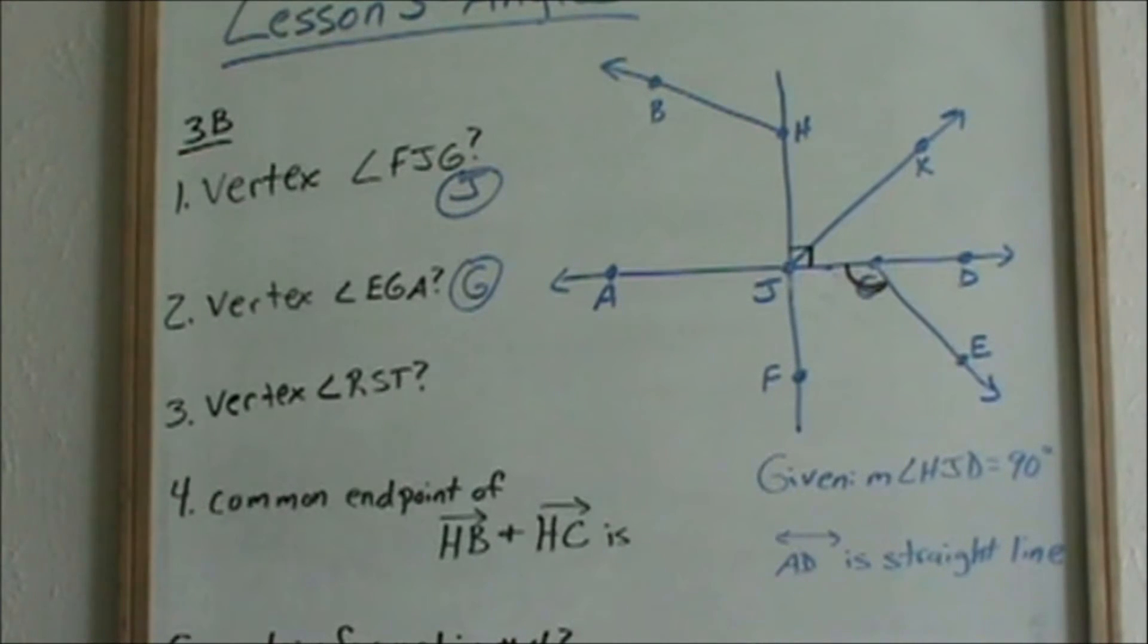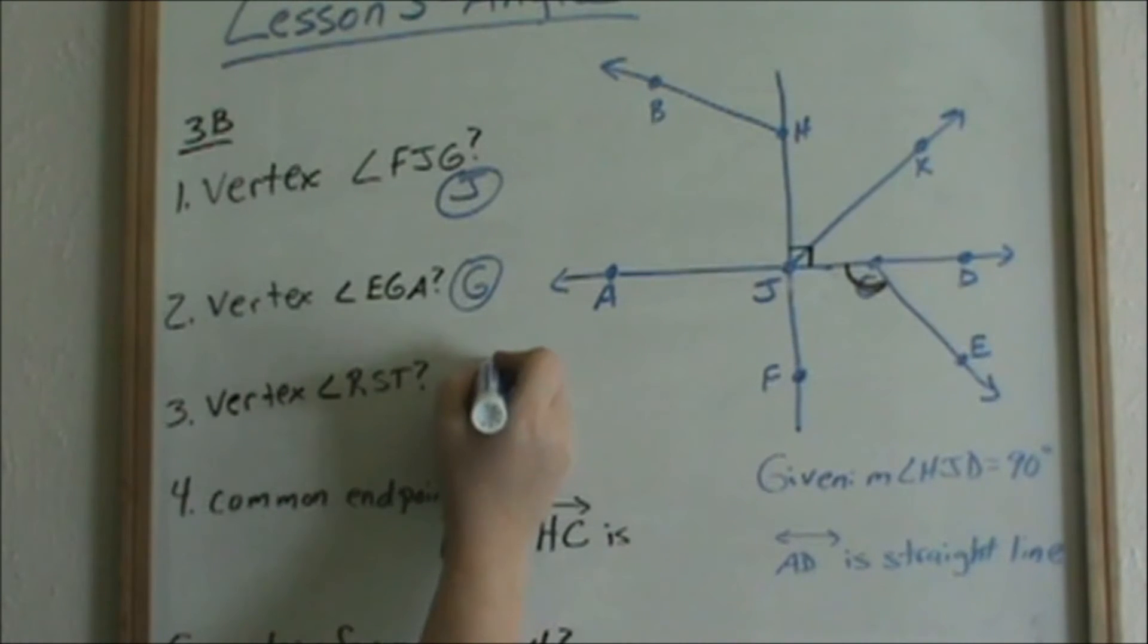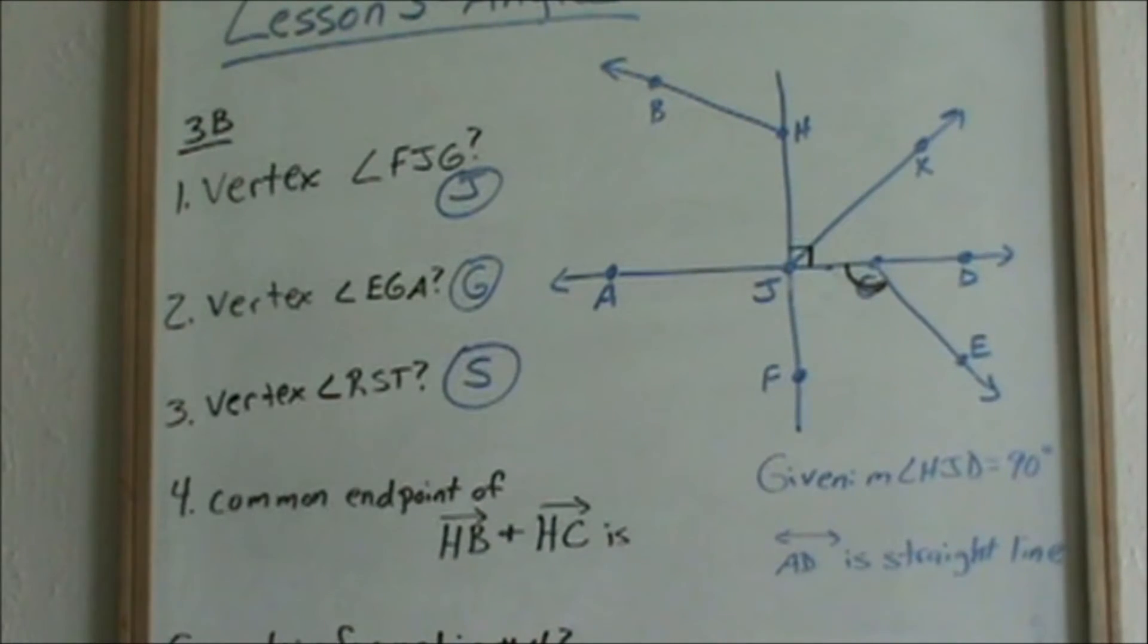Now number 3 says, what is the vertex of angle RST? That's not in your picture, and it tells you it's not shown. Again, you don't have to have a picture to know the vertex is always the middle letter. So S is your vertex, the middle letter.